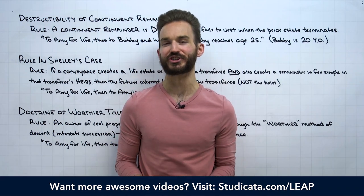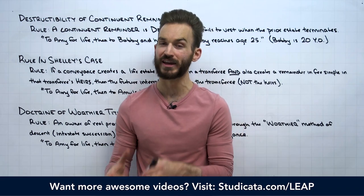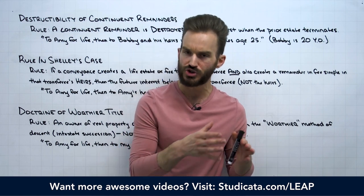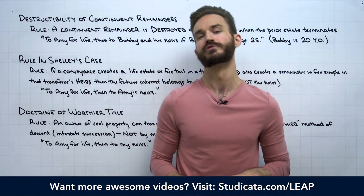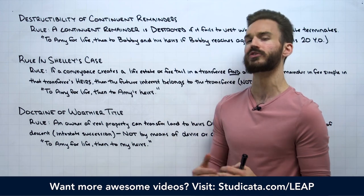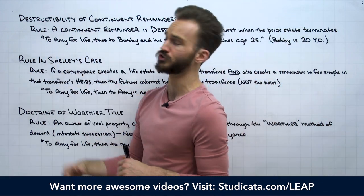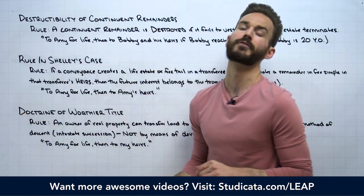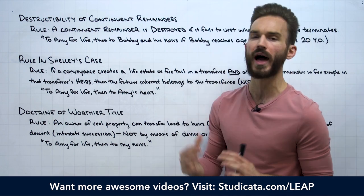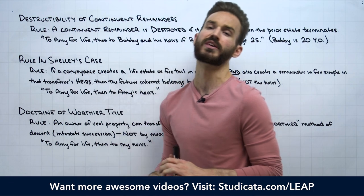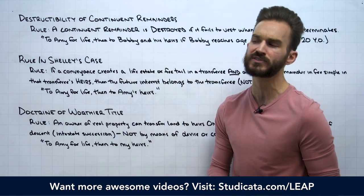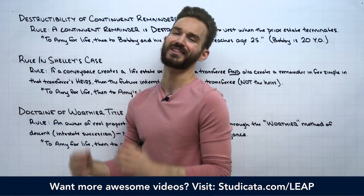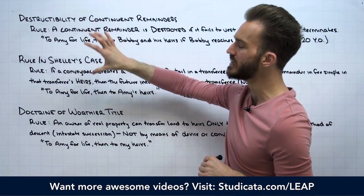In this lesson, we're continuing our discussion of present estates and future interests. Specifically, we want to focus on some common law limitations when we're dealing with future interests that are held by a transferee. In this lesson, we're going to focus on three major common law doctrines: the destructibility of contingent remainders, the rule in Shelley's case, and the doctrine of worthier title. The rule against perpetuities probably warrants its own video, so we'll get to that in our next lesson.